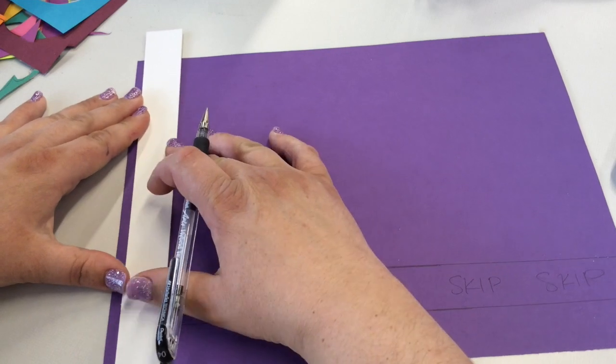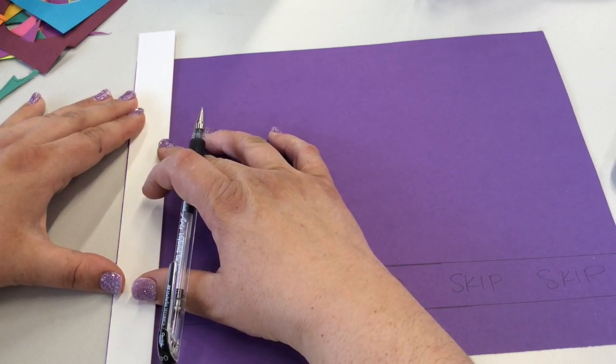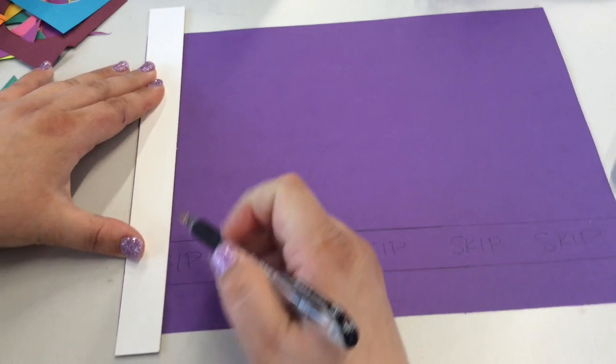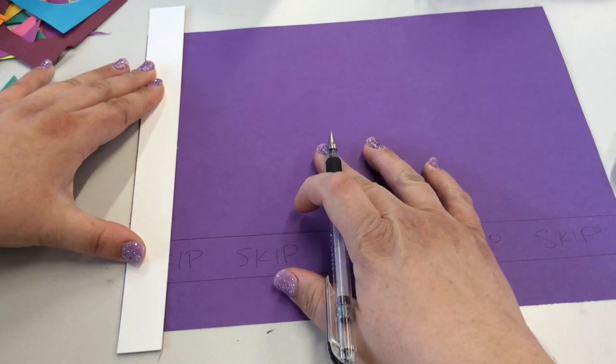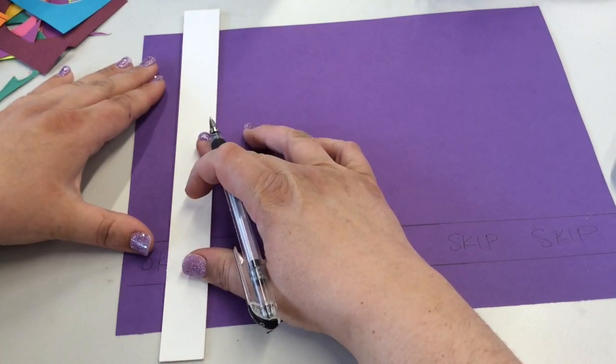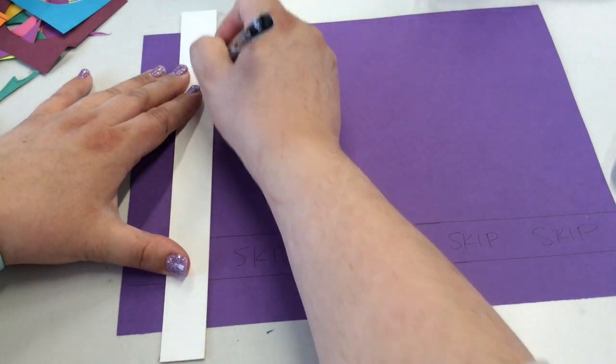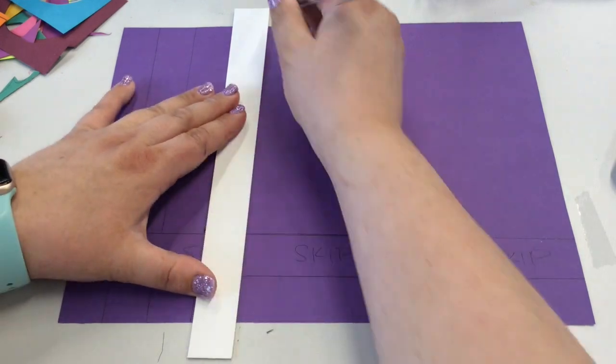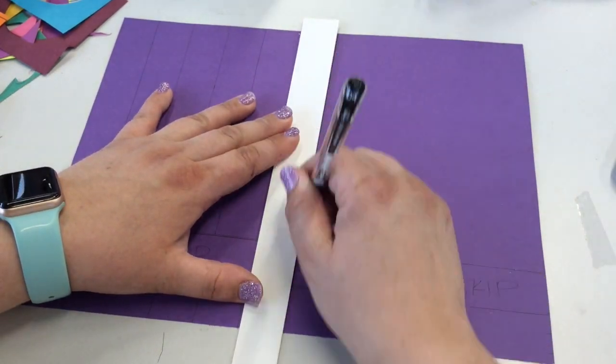Then flip your paper horizontally or in landscape position, line up your straight edge, draw, skip over that section, and draw that little bit at the bottom. You're going to repeat this all the way across, making sure that your straight edge lines up with the previous line you just drew.